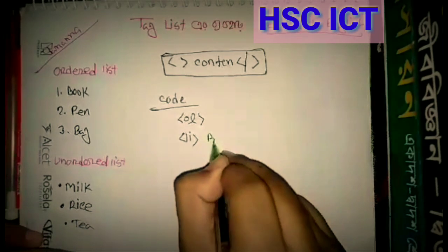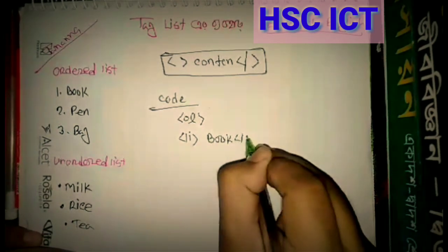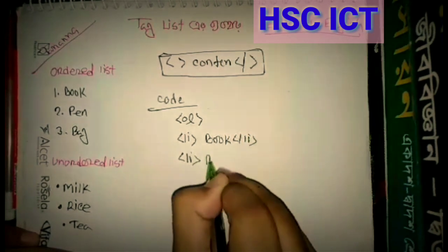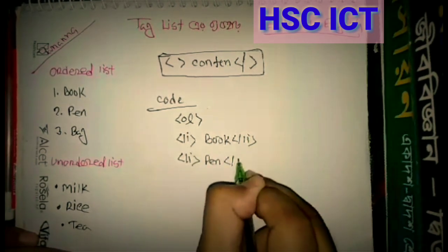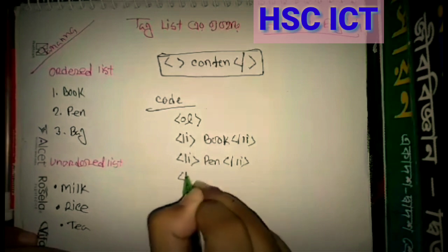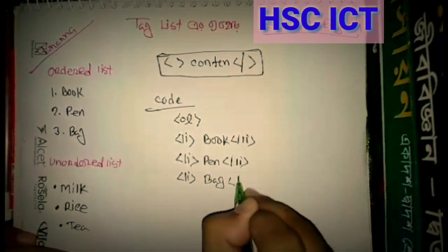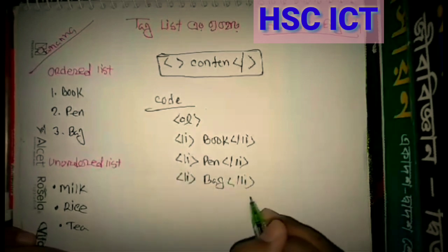The order list items use li tag. First, book. This is close. Then, pen. Then, bag. This order list is close.